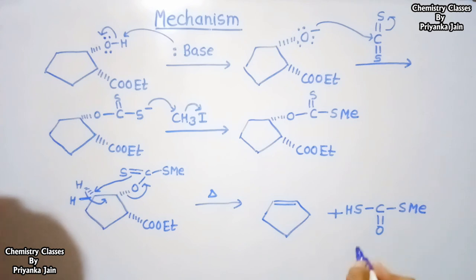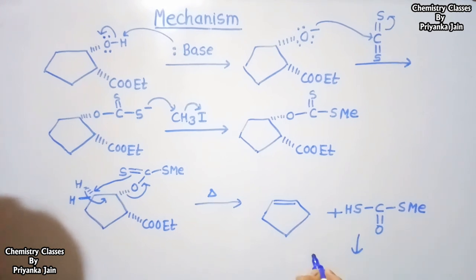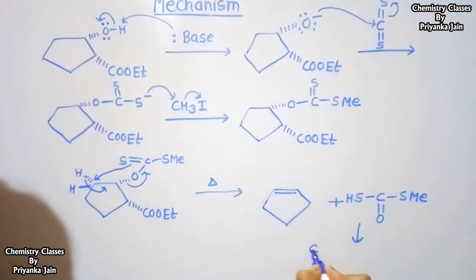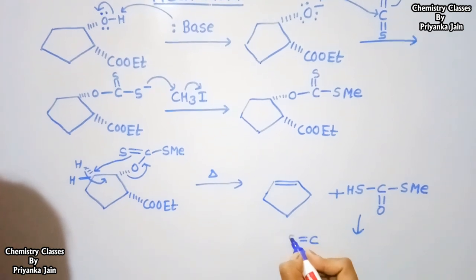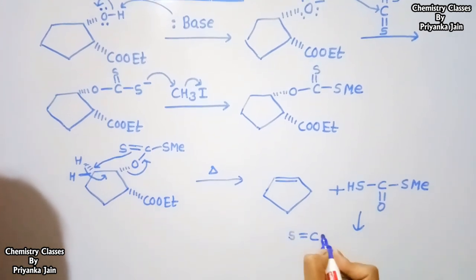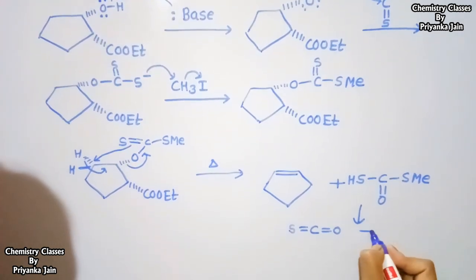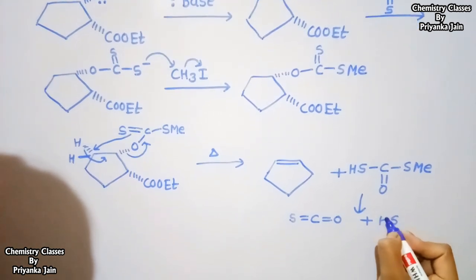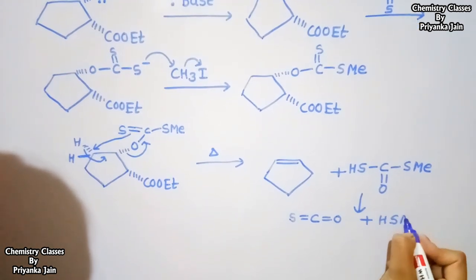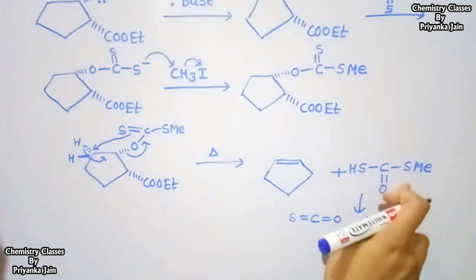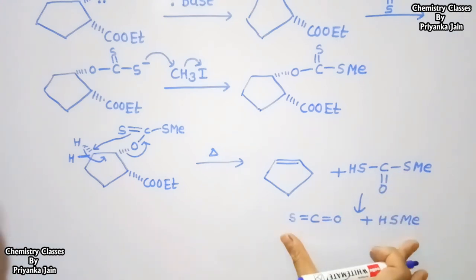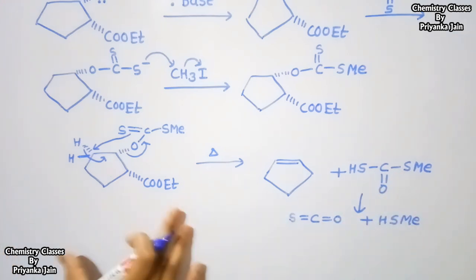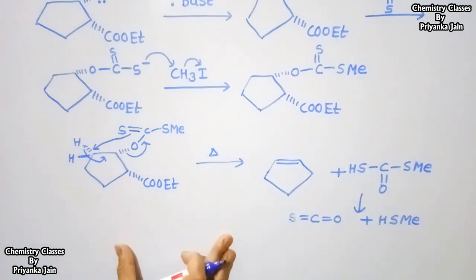This compound can further undergo dissociation, giving us two separate compounds. So this is the overall mechanism of the Chugaev Elimination Reaction.